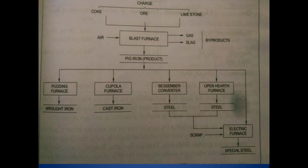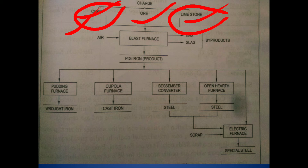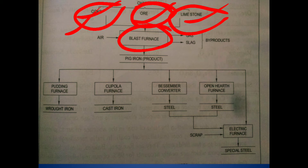To make iron, we take three raw materials: iron ore, coke, and limestone. Coke is used for high temperature. By using coke and limestone, we carry out chemical reactions to eliminate manganese, silicon, and other impurities from the ore. From the ore, we extract the iron.